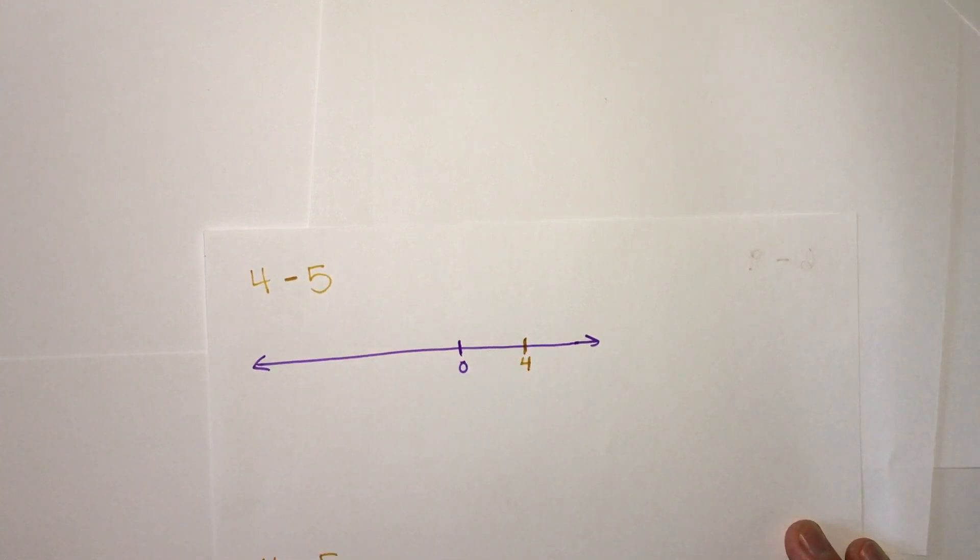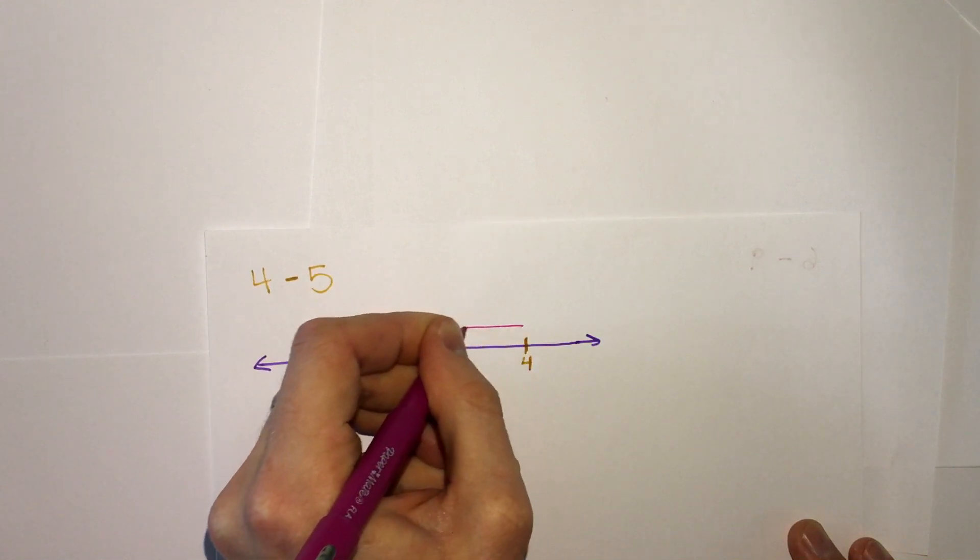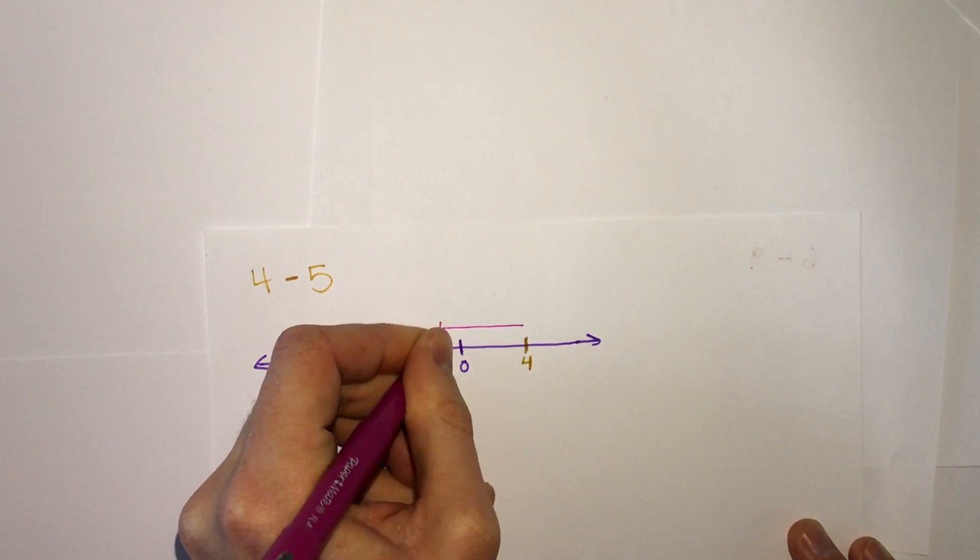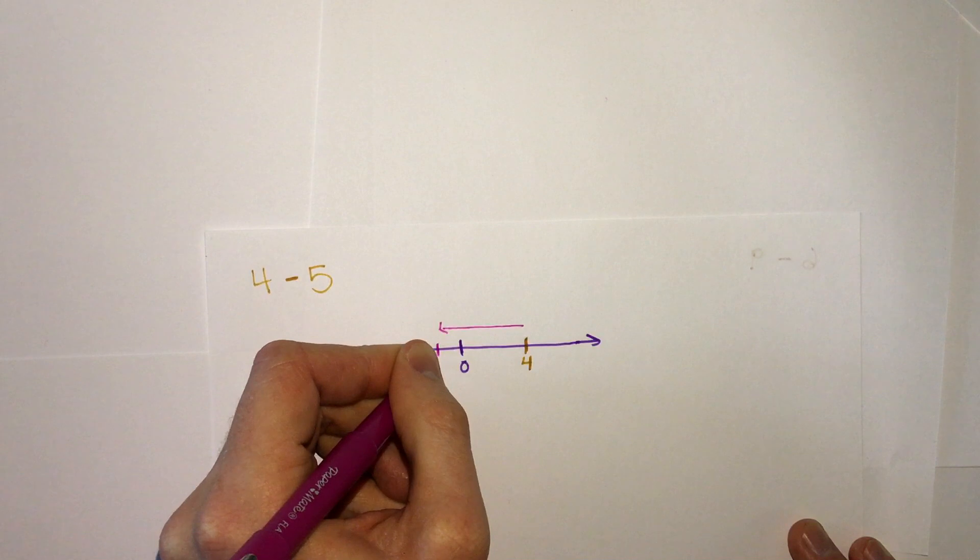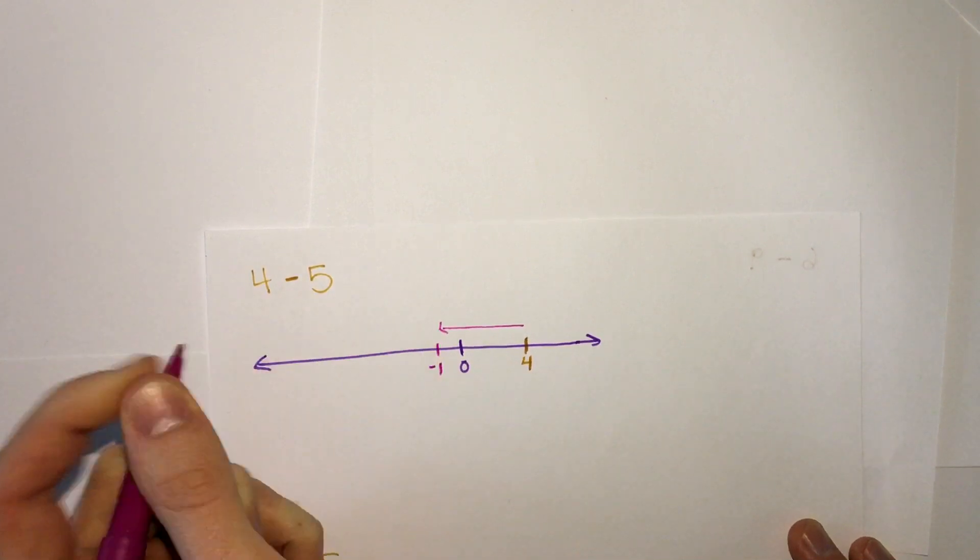So we start with 4, and if we're subtracting 5, we know that we are getting smaller, we go to the left. So we go 5 to the left, and 4, and one more, we end up at negative 1.